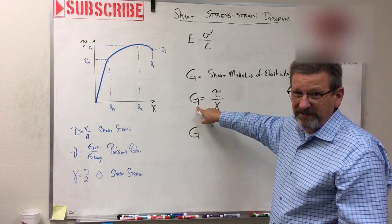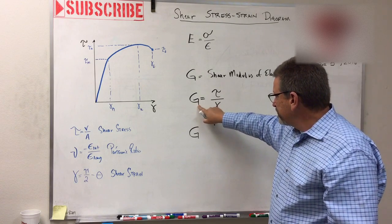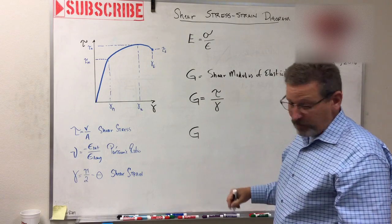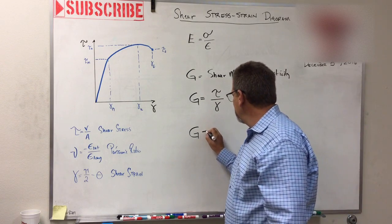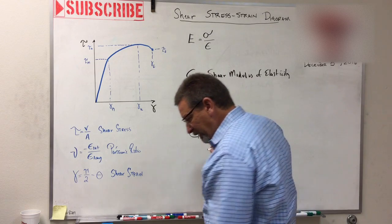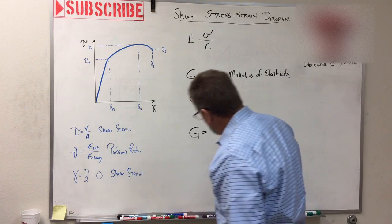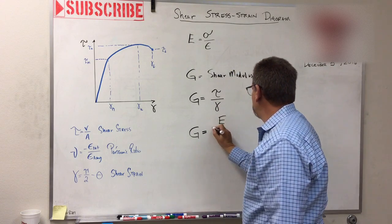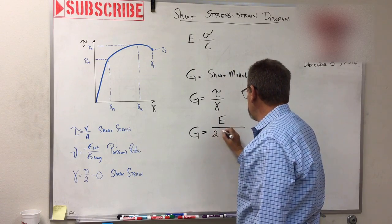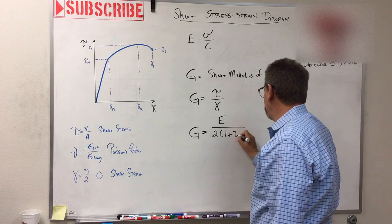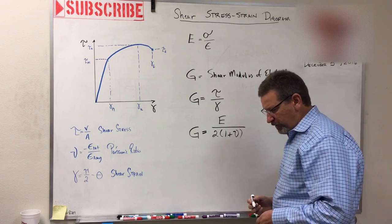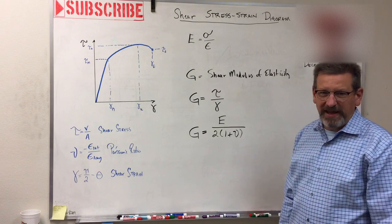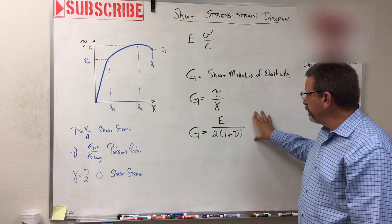So G—and G is a look-them-up value; I can look that up in the material property table in the back of my book—so this is something we're going to be given sometimes in some of the equations, and you need to know these equations to know how to use it. But G is equal to E, which is the modulus of elasticity, divided by 2 times 1 plus Poisson's ratio.